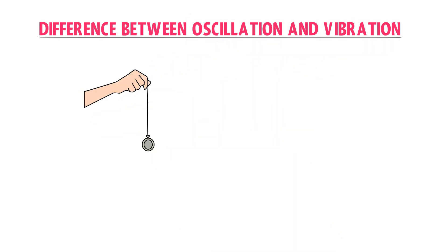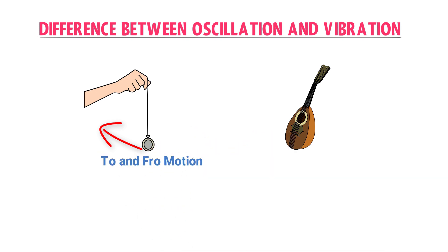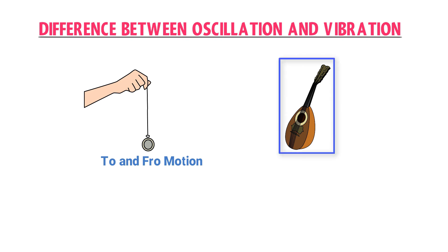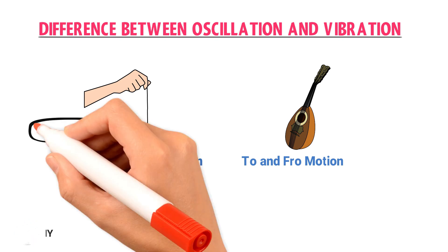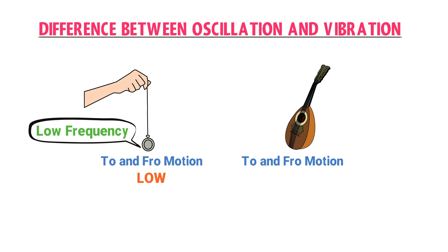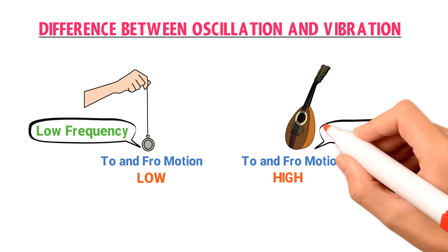For example, consider a pendulum and a guitar. If I displace the pendulum from its mean position, it starts to-and-fro back-and-forth motion. If I pluck the string of a guitar, the string also starts to-and-fro motion. However, the to-and-fro motion of the pendulum is slow compared to the string of the guitar, so the pendulum's frequency is low. The to-and-fro motion of the guitar string is very high compared to the pendulum, so the string's frequency is high.